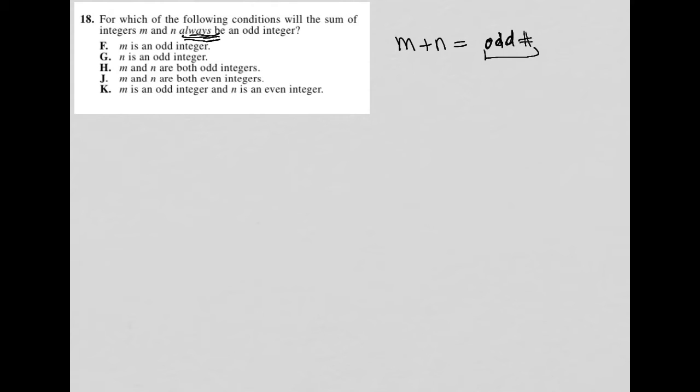So because there's no other information provided, I must go to my answer choices now. And let's test these out. So choice F says m is an odd integer. Well, I can make up a number for that, which is what I suggest you do. So let's say m is 3, right?